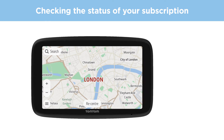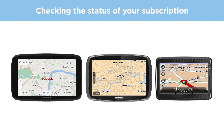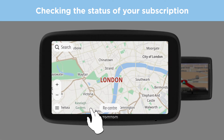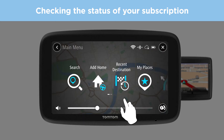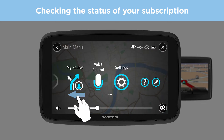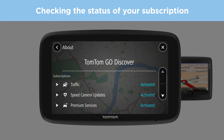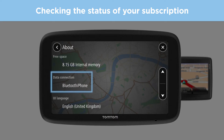The following steps can vary depending on which device you have. If you don't see the same menu options, see the later sections of this video. Open the main menu, select the question mark, and then select About to see your subscriptions. Further down this page, you can see your connection status, where you can verify that the data sharing connection with your phone is activated.